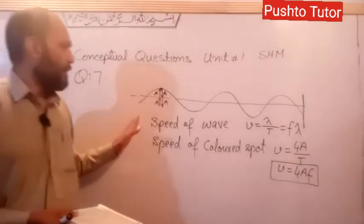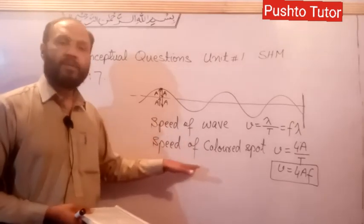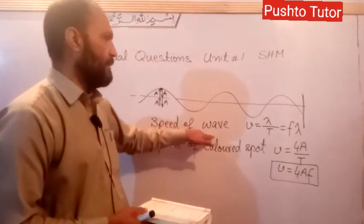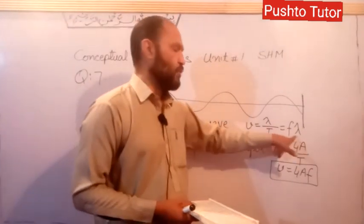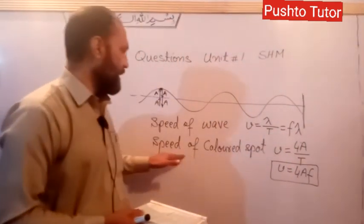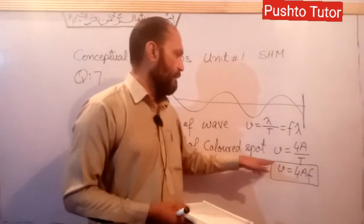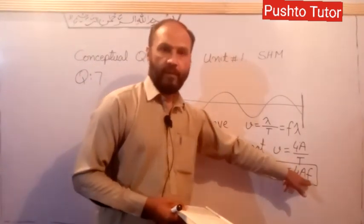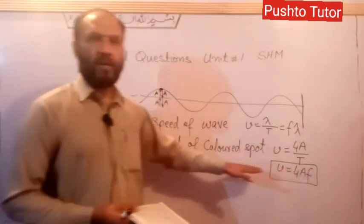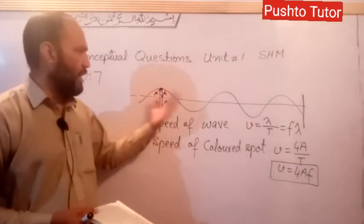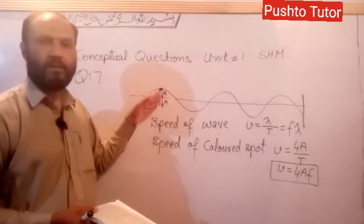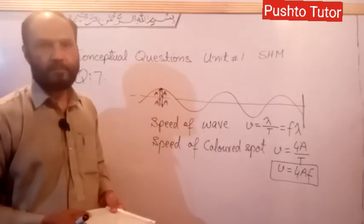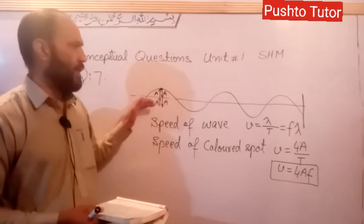The difference between the speed of the wave and the speed of the colored spot is that the speed of the wave is found by v = fλ, and the speed of the colored spot is found by v = 4AF. The colored spot does not move forward but vibrates or oscillates about the mean position, while the wave moves forward.